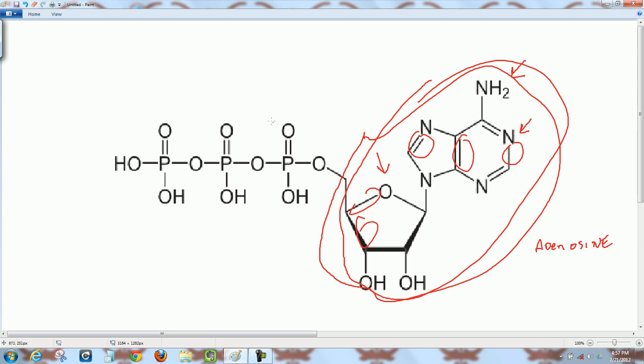Now over here we have a repeating pattern over and over again. If you look right here we have this repeated over and over again. Actually this thing is a phosphate group. This is called phosphate.